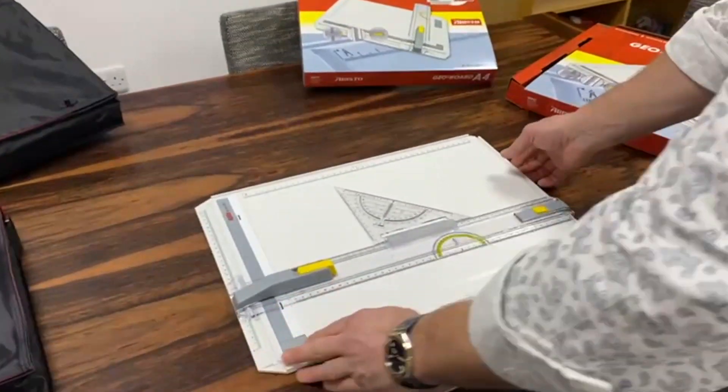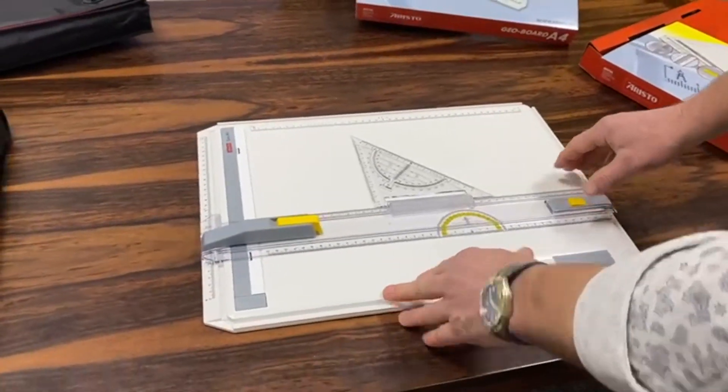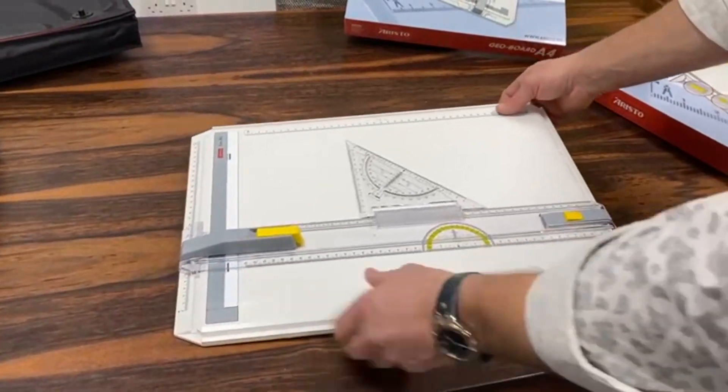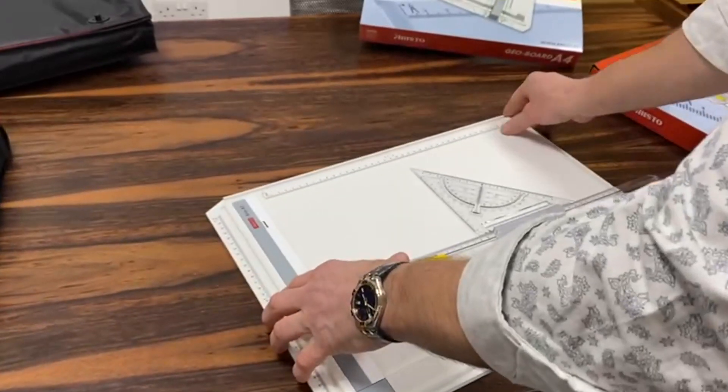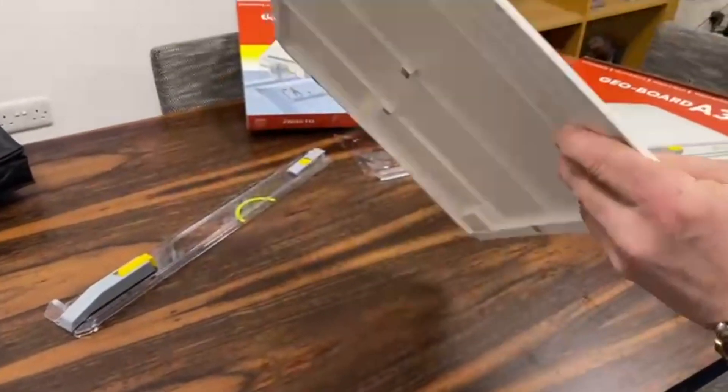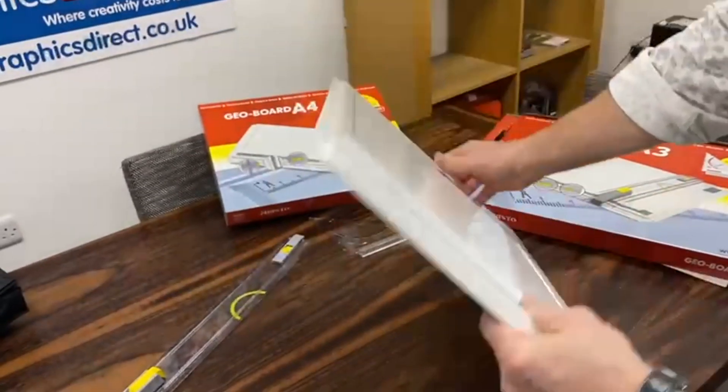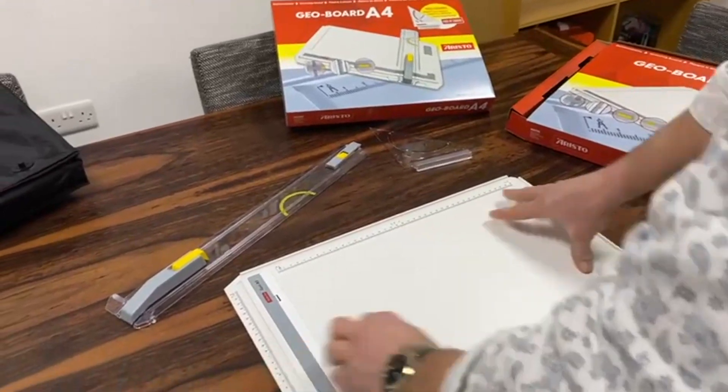What we have here is a very hard-wearing plastic drawing board that's very well-featured. On the back here, I'll just take the parallel motion off first - we have little rubber feet that stick very well to the board.